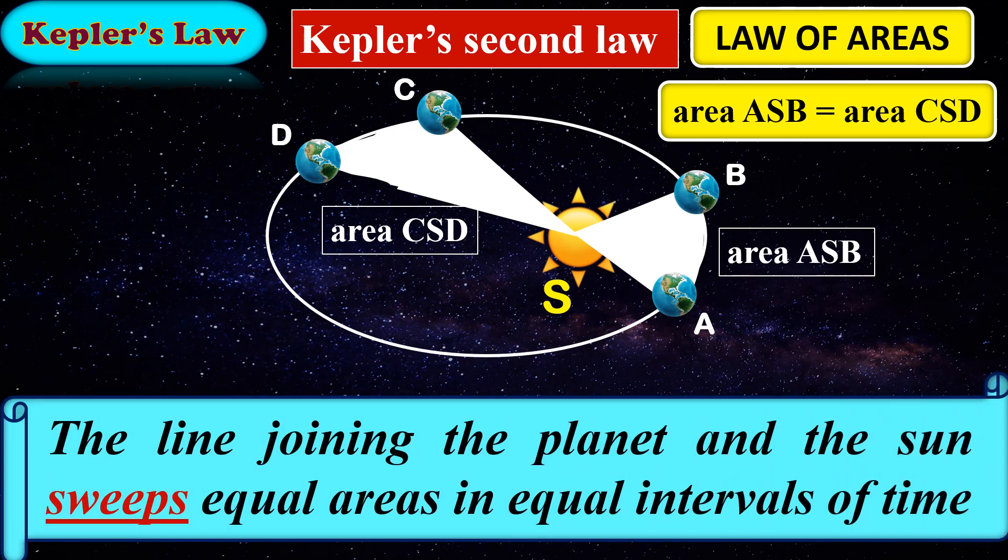Therefore, Kepler's second law states that the line joining the planet and the sun sweeps equal areas in equal intervals of time.